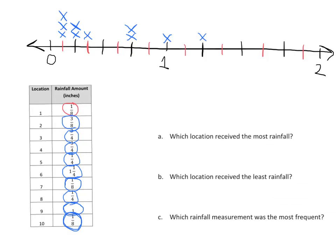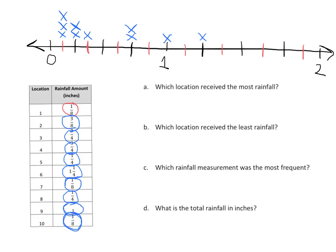So now we have some questions that they want us to answer. So the first question is, which location received the most rainfall? And we know that the one that received the most rainfall is this one, and that's one and one-fourth. So that means location number six received the most rainfall.